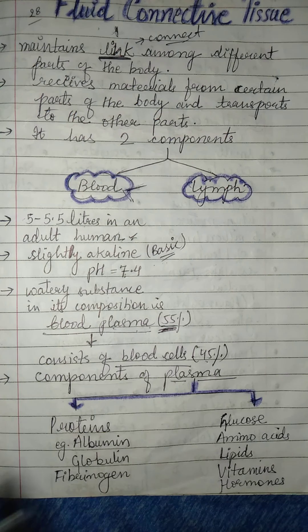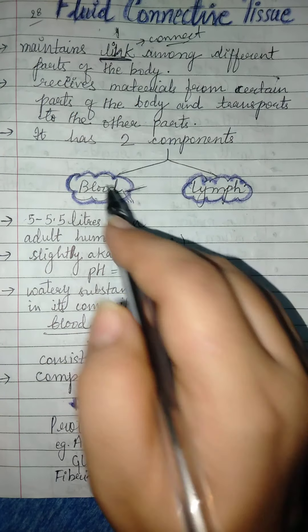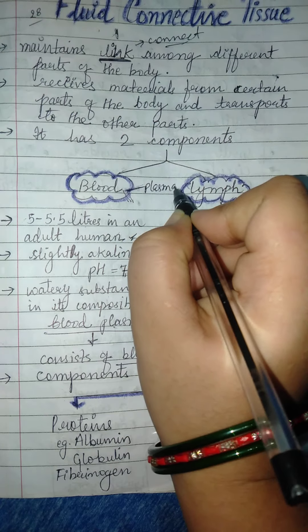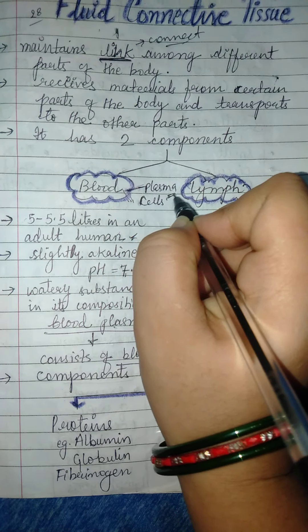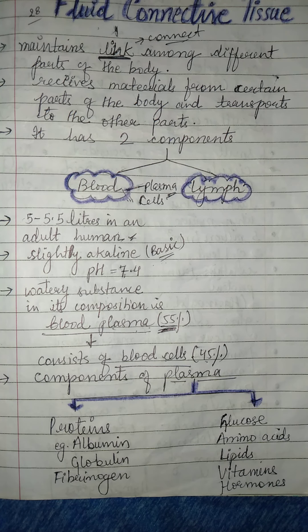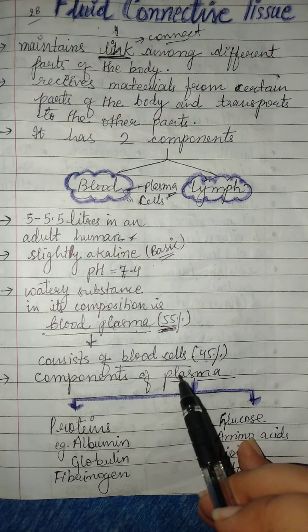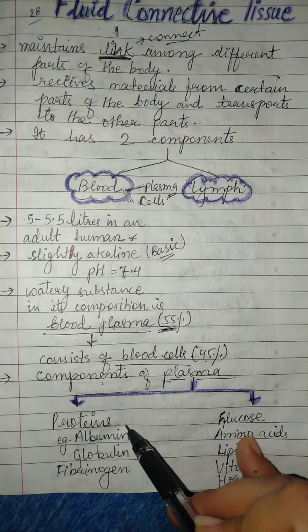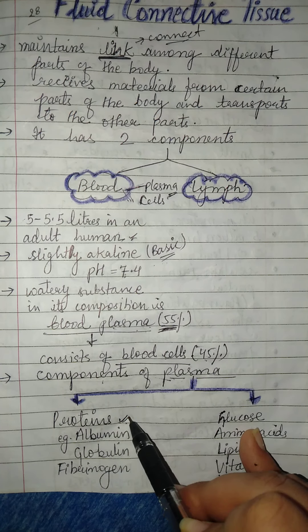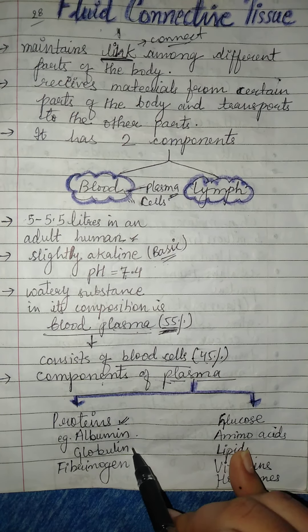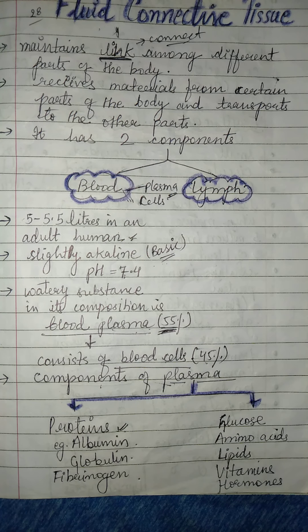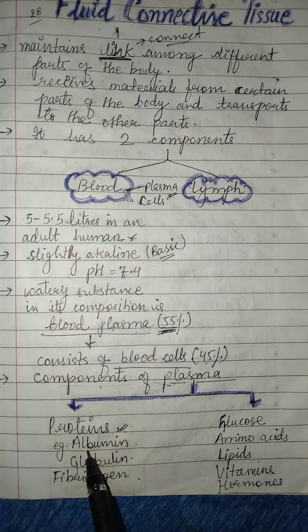To summarize the composition of blood: there are two things — one is the fluid part, plasma, and the other is cells. Now, what does plasma contain? Plasma contains proteins — such as albumin, globulin, and fibrinogen. These proteins are responsible for blood clotting when there is an injury; you can see a black spot where the blood clots. Also, if there is a foreign bacteria or virus entering the body, some proteins trigger allergic reactions or fever.